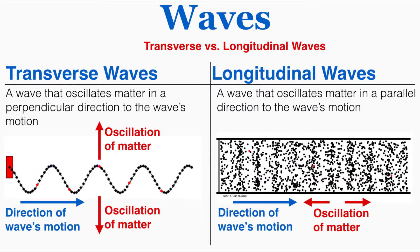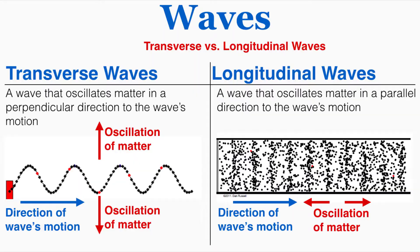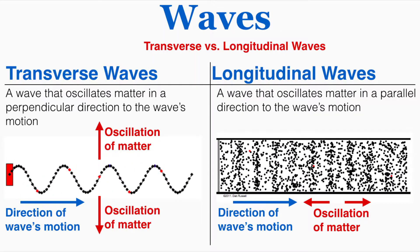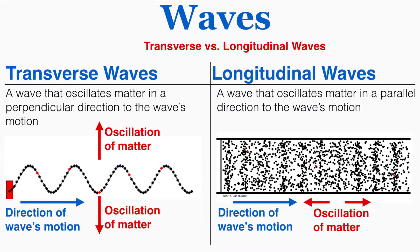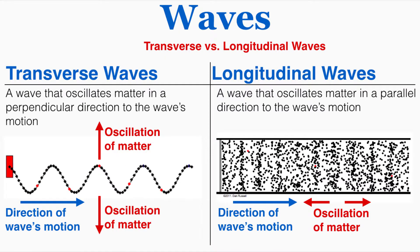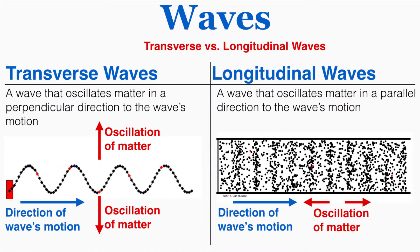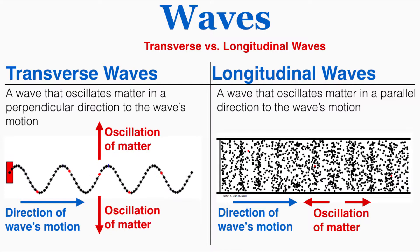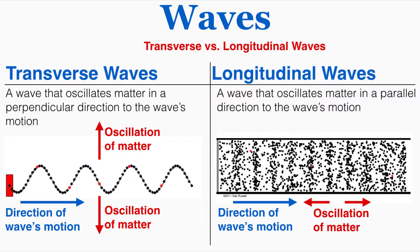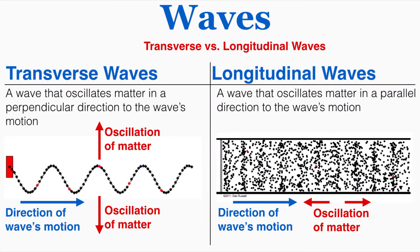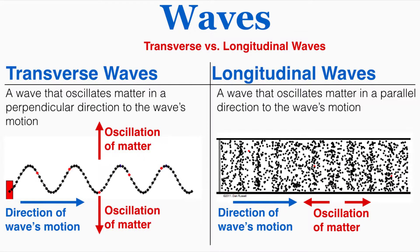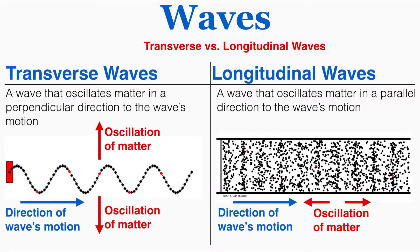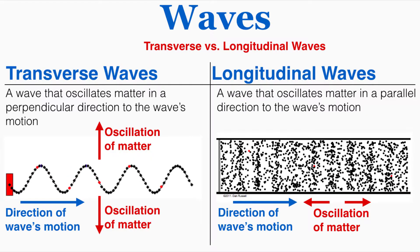You can see in the transverse wave that the wave is moving from left to right, but if you observe what any one particle in the wave is doing, that one particle is only moving up and down. So the oscillation of the matter is perpendicular to the direction of the wave — the wave is moving from left to right and the matter is moving up and down. That's the definition of a transverse wave.